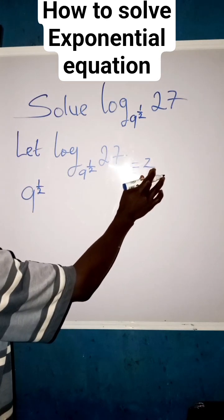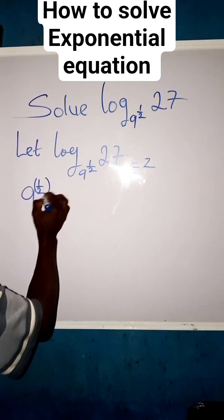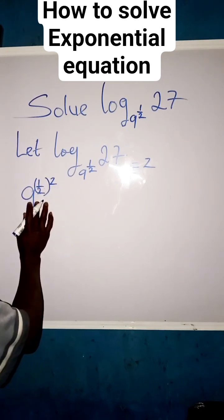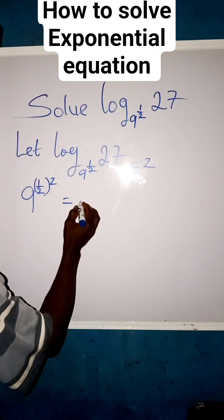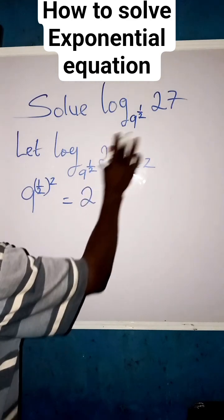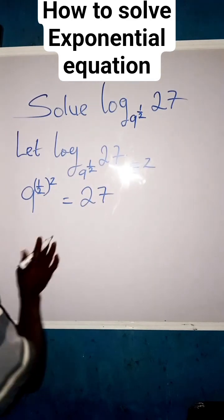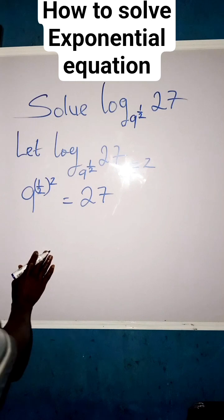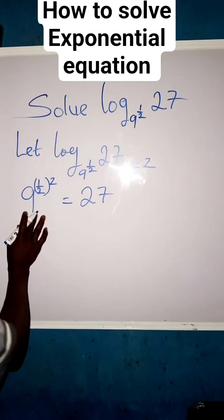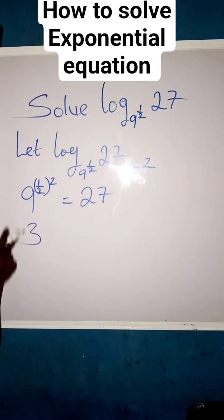This z here, we multiply this power 1/2, then equals to this 27 will come over here. This is all of indices, so that we now break this down. This 9 here we break it...